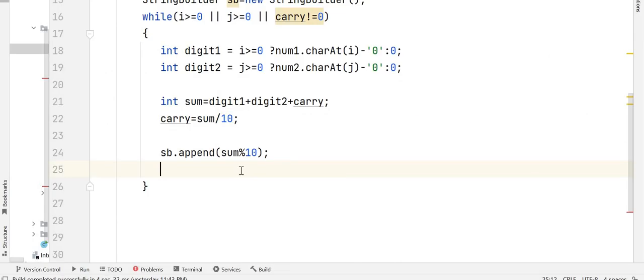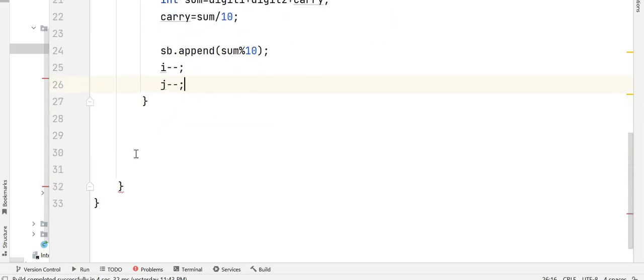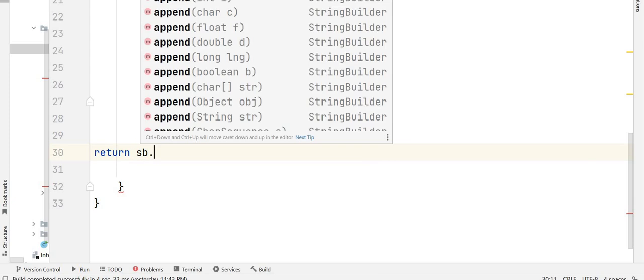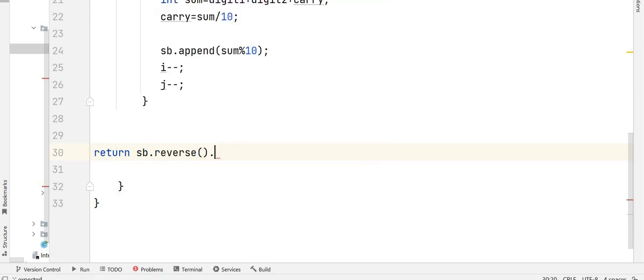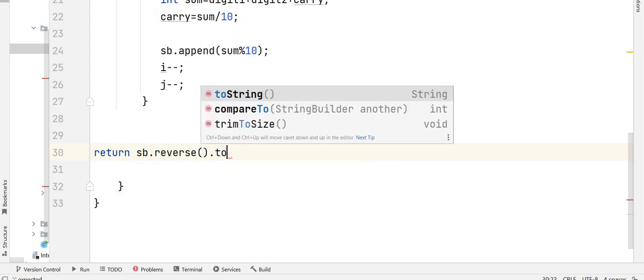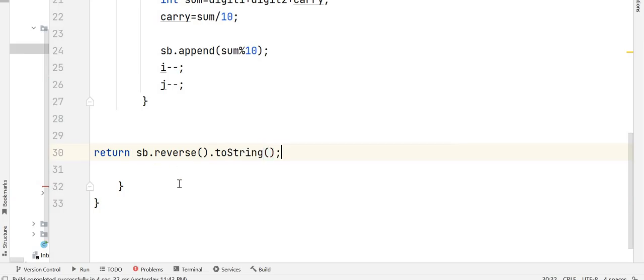So move on to the next digit. So move on to the next digit means i minus minus j minus minus because we are moving from right to the left side. And at the end we are going to return sb.reverse.toString. Why toString? Because this is a string builder and we need the output as a string.